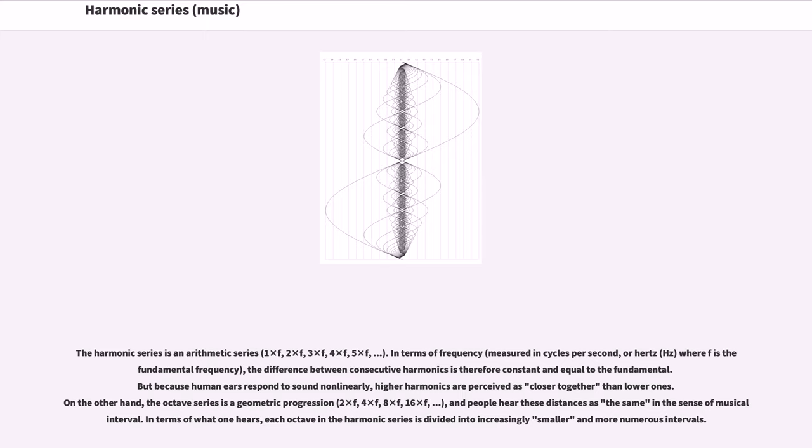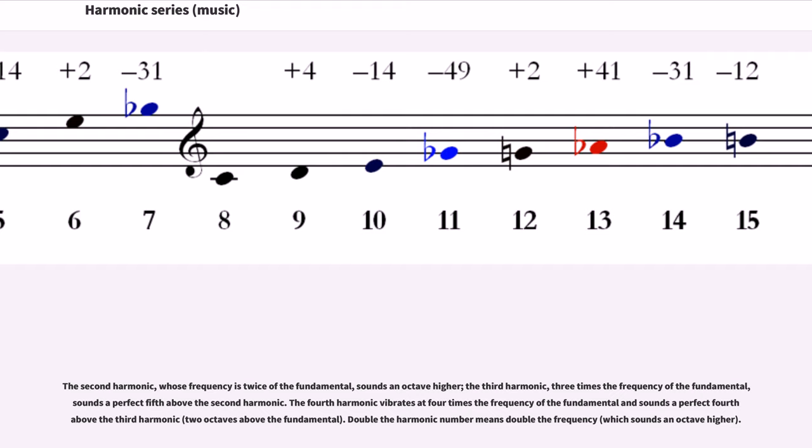In terms of what one hears, each octave in the harmonic series is divided into increasingly smaller and more numerous intervals. The second harmonic, whose frequency is twice the fundamental, sounds an octave higher. The third harmonic, three times the frequency of the fundamental, sounds a perfect fifth above the second harmonic. The fourth harmonic vibrates at four times the frequency of the fundamental and sounds a perfect fourth above the third harmonic, two octaves above the fundamental. Double the harmonic number means double the frequency, which sounds an octave higher.